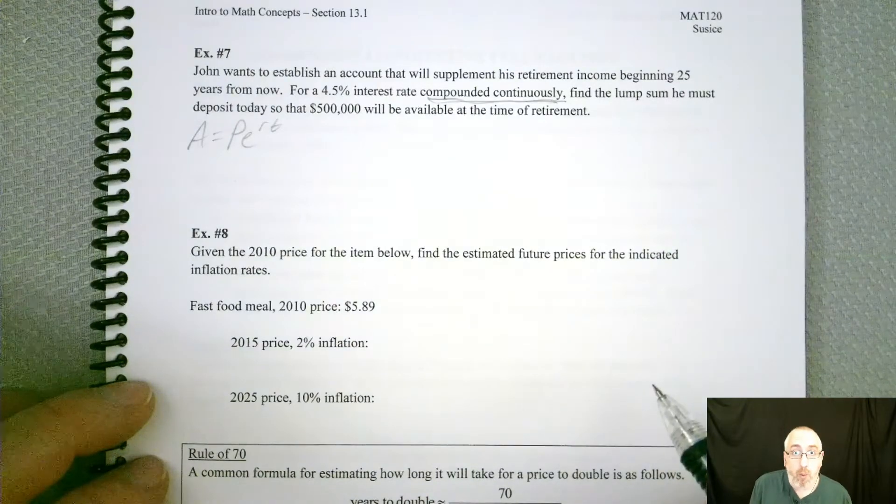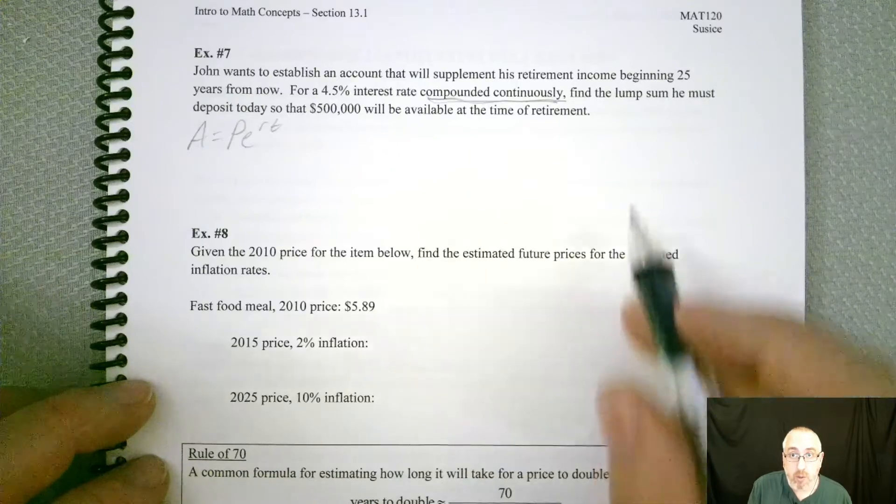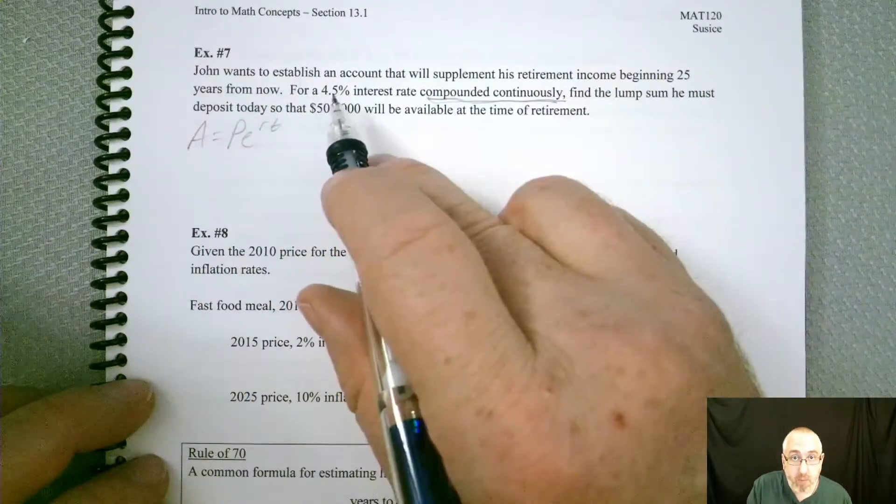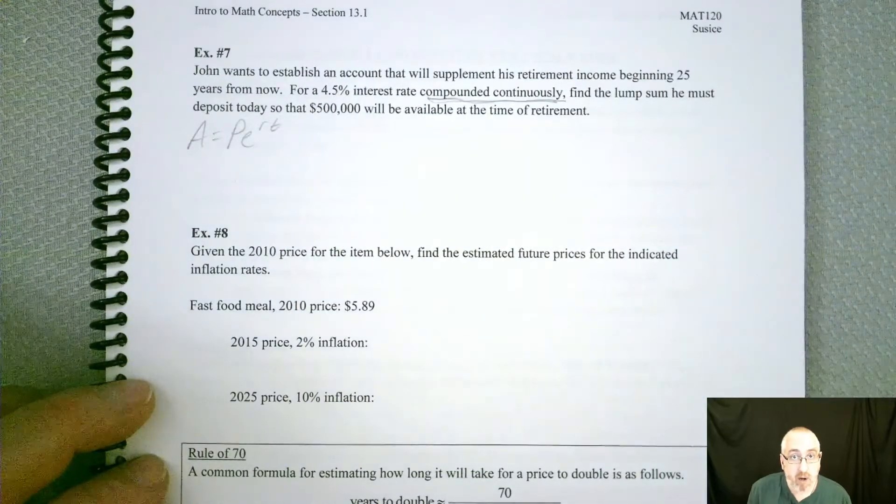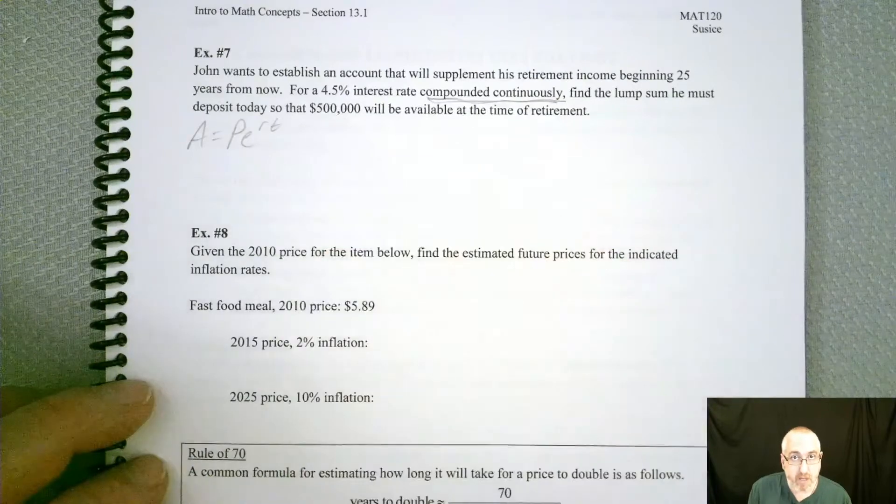So now, what do we know and where does it go? So we've got 25 years, so there's our time. We've got a 4.5% interest rate, so that's going to have to be our R. So what's this $500,000? Be careful.